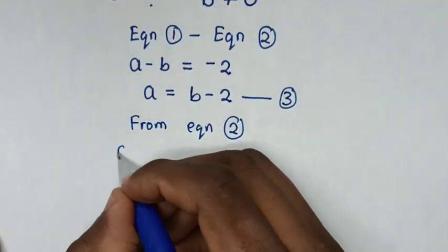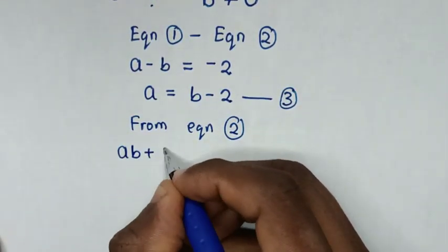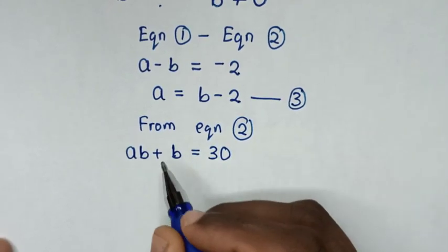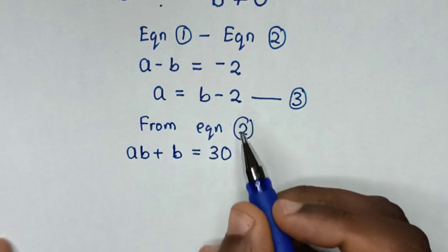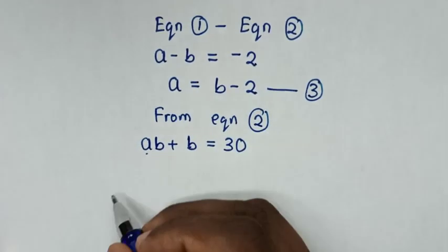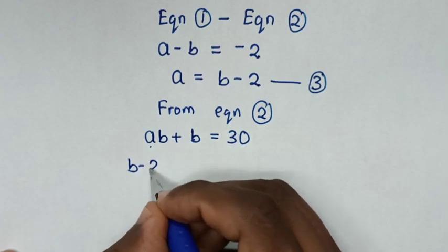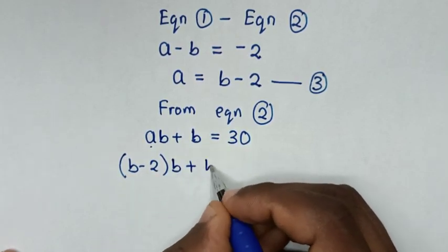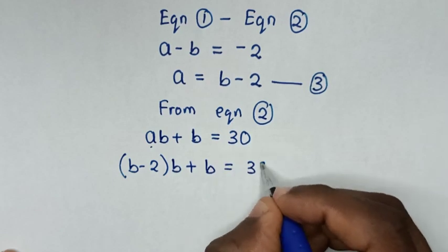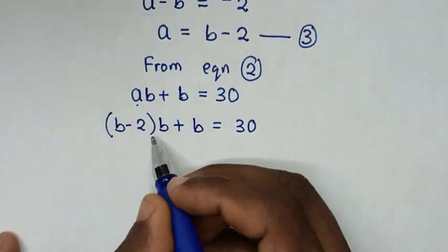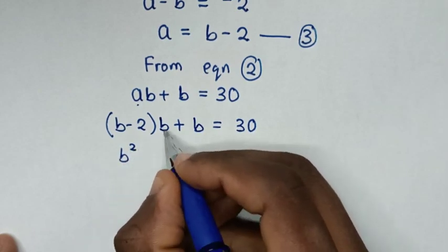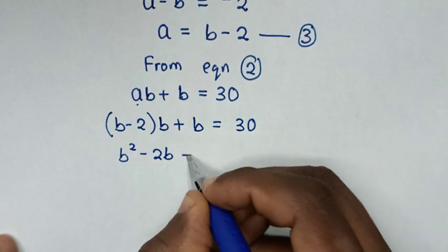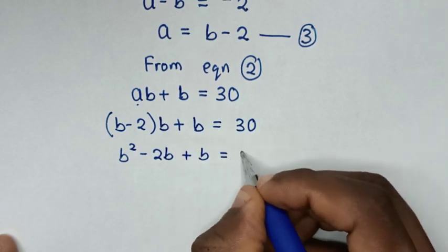From AB plus B is equal to 30, we'll substitute the value of A, which is B minus 2, into here. So it will be (B minus 2) times B plus B is equal to 30. Then B times B is B squared, B times negative 2 is negative 2B, then plus B is equal to 30.